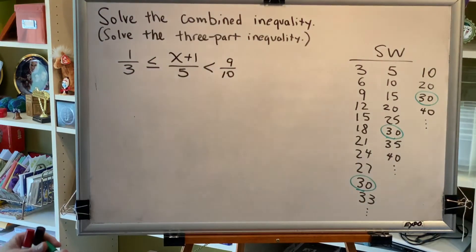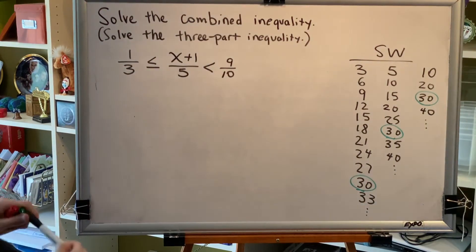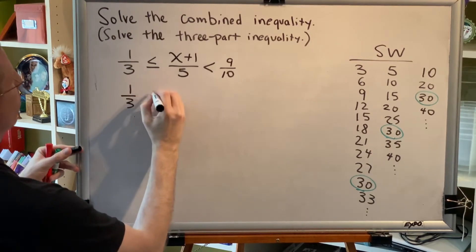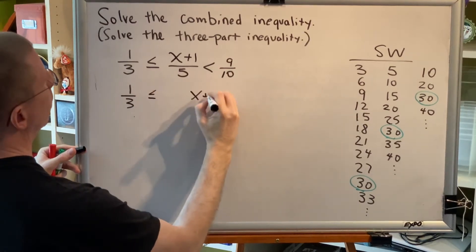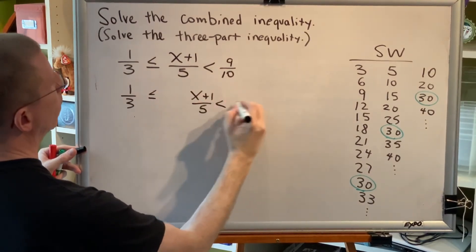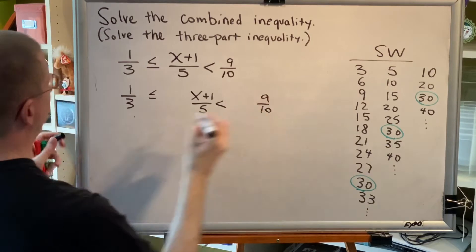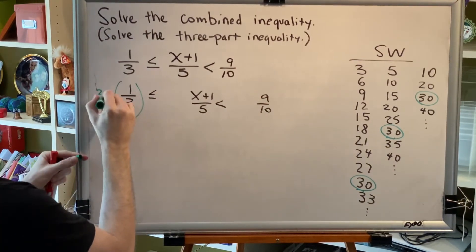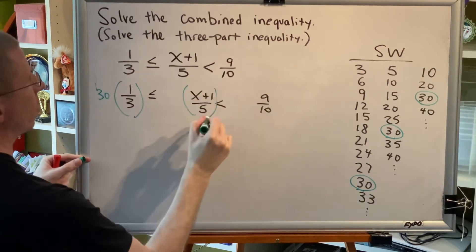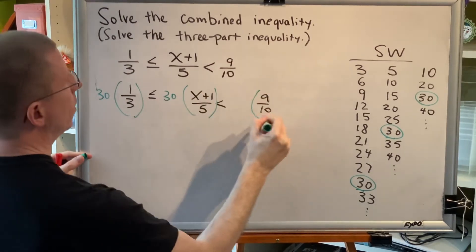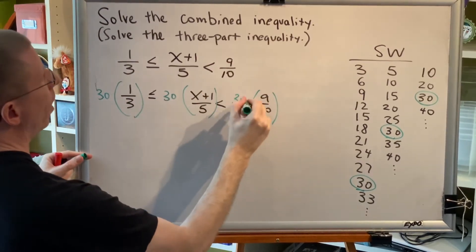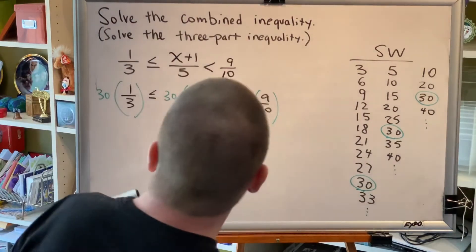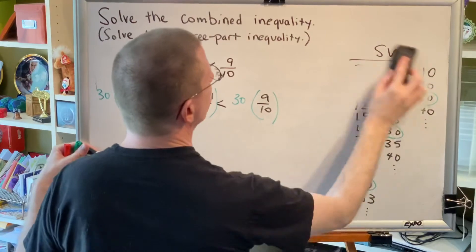So my least common denominator is 30. And the first thing that I need to do for this problem is to multiply all three zones by 30. So this one third has to be multiplied by 30. This whole fraction has to be multiplied by 30. This nine tenths has to be multiplied by 30.